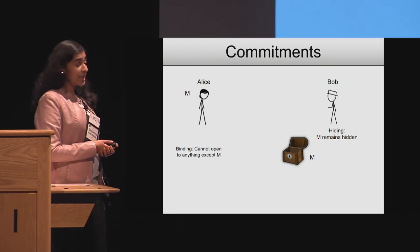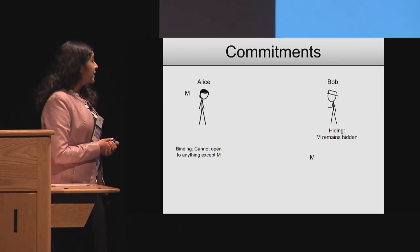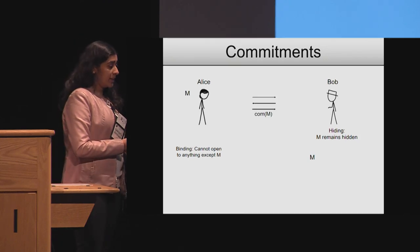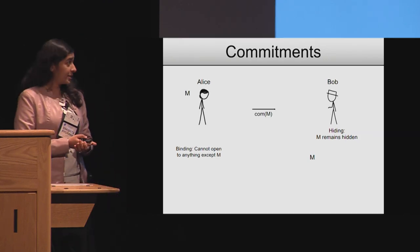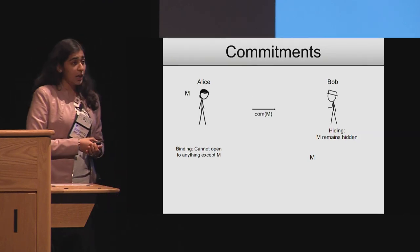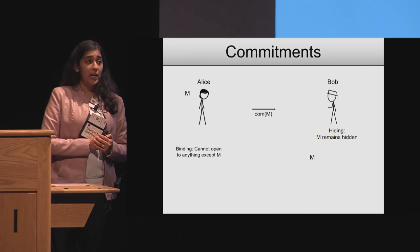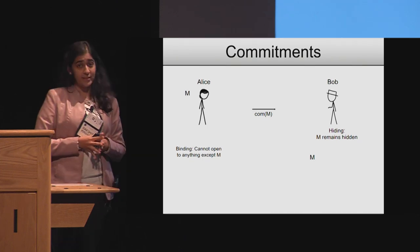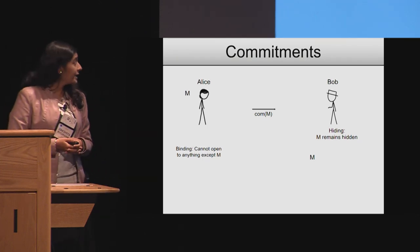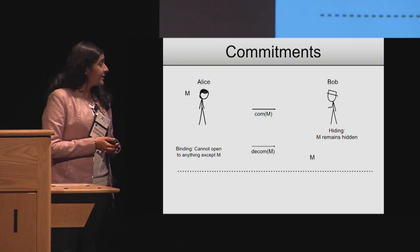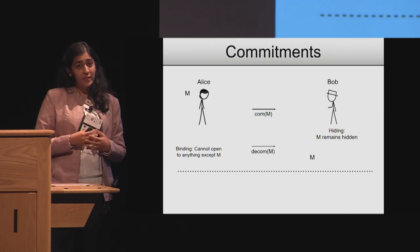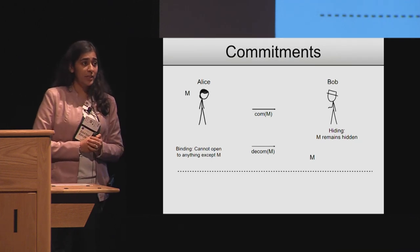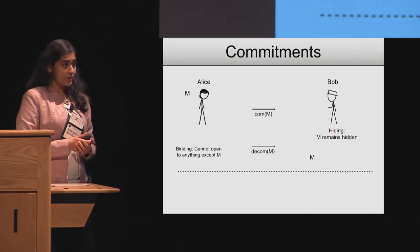What actually happens in the protocol world is that Alice and Bob either interactively or non-interactively generate a transcript. This serves as a commitment to Alice's input. And later on, Alice sends some decommitment information that allows Bob to check that the committed value was indeed this message.